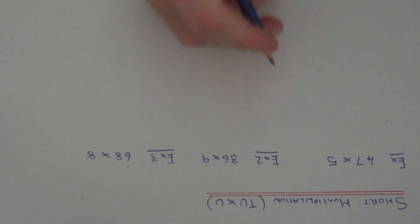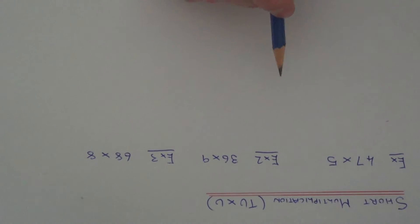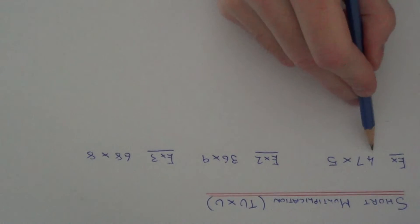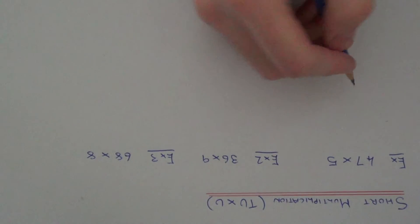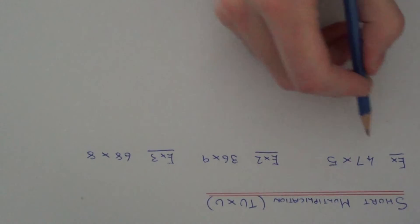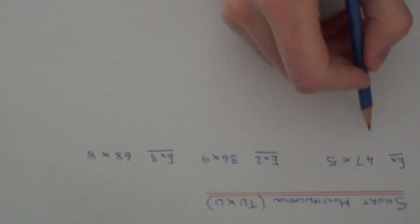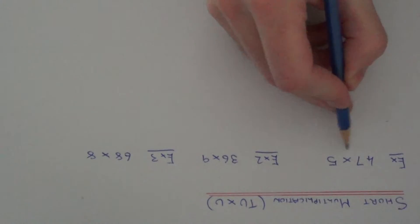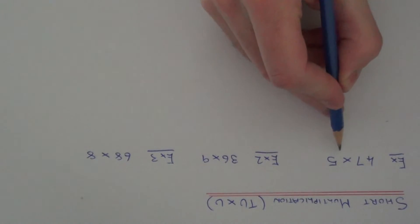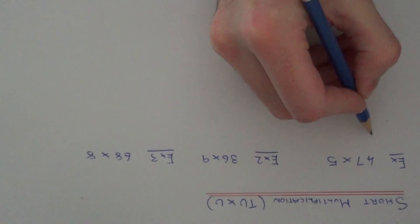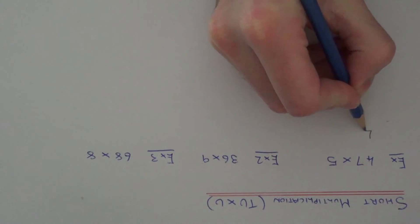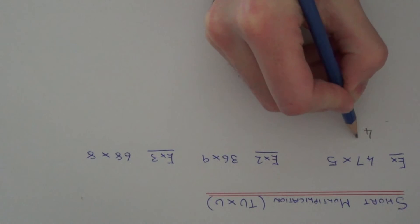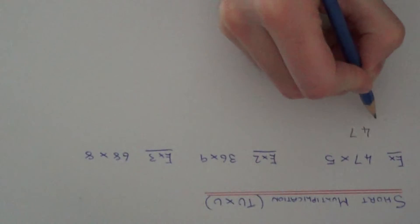Today I'm going to show you how to use short multiplication to multiply a two digit number by a single digit number. So let's look at example one — we need to work out 47 times 5. First of all, write the numbers down in columns.